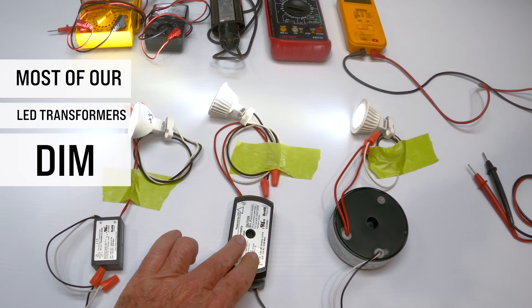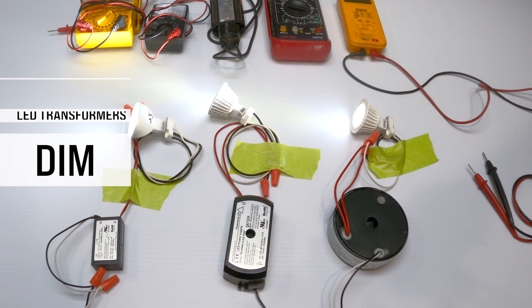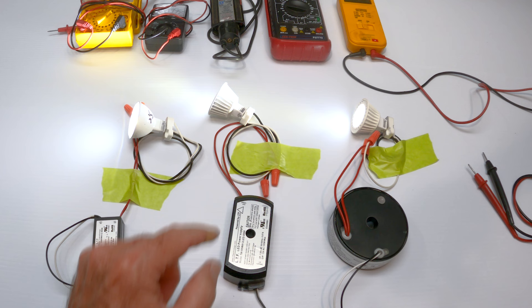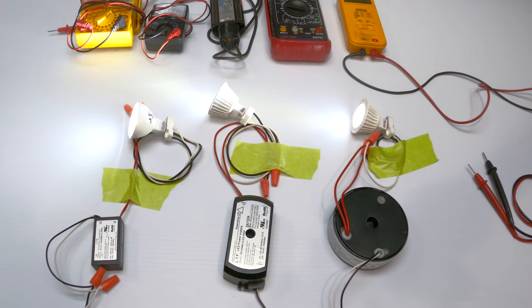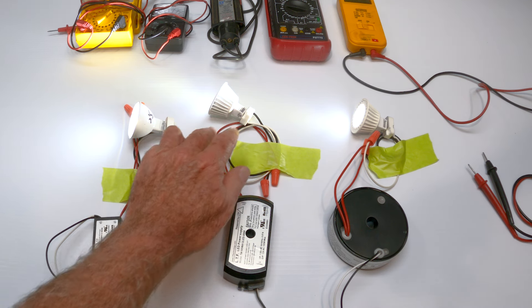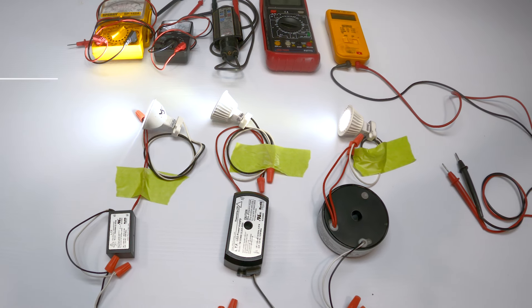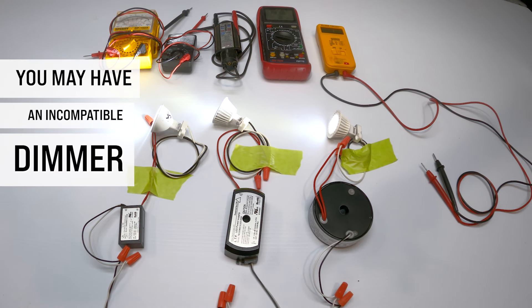Now, LED transformers are dimmable. So the voltage coming in, which is varied by your dimmer, affects the voltage going out to the bulb. That's how this gets dimmed. So you may have a brand new LED bulb, you may have your brand new transformer, but going back to your dimmer, you may not have a dimmer that's made for LED lighting.